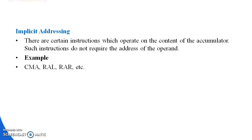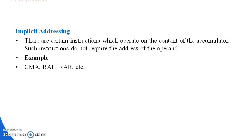Next is Implicit Addressing Mode. There are certain instructions which operate on the content of the accumulator and do not require the address of the operand. For example: CMA — complement the content of the accumulator; RAL — rotate accumulator left; RAR — rotate accumulator right. This covers all the different types of addressing modes.